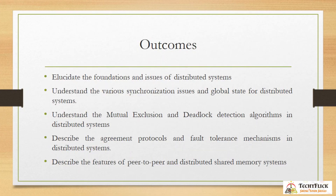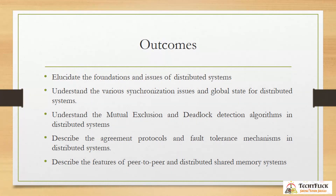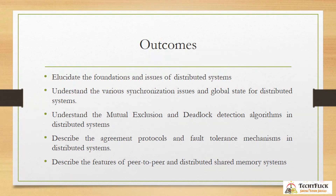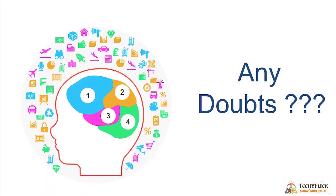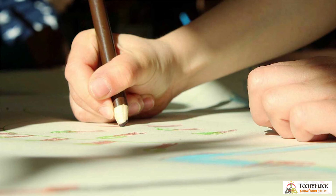The outcomes of Distributed Systems: after learning all 5 units, the student can elucidate the foundation and issues of distributed systems; understand various synchronization issues and global state; understand mutual exclusion and deadlock detection algorithms; describe agreement protocols and fault tolerance mechanisms; and describe the features of peer-to-peer and distributed shared memory systems. The Textbook 1 link is in the description box. If you have any doubts, leave them in the comment section. Thank you.